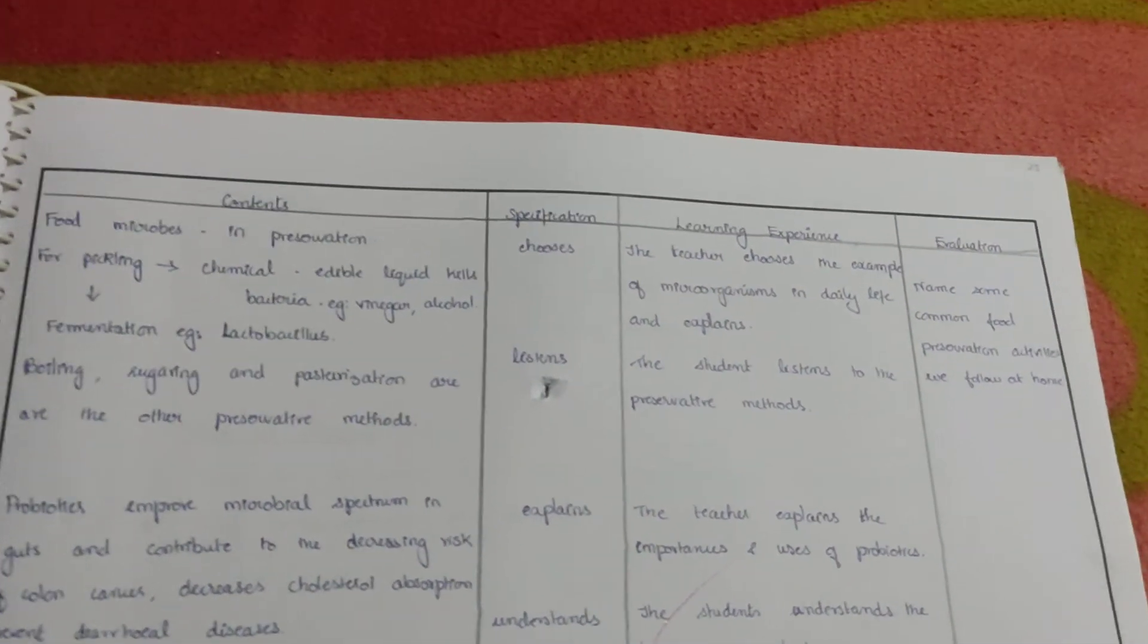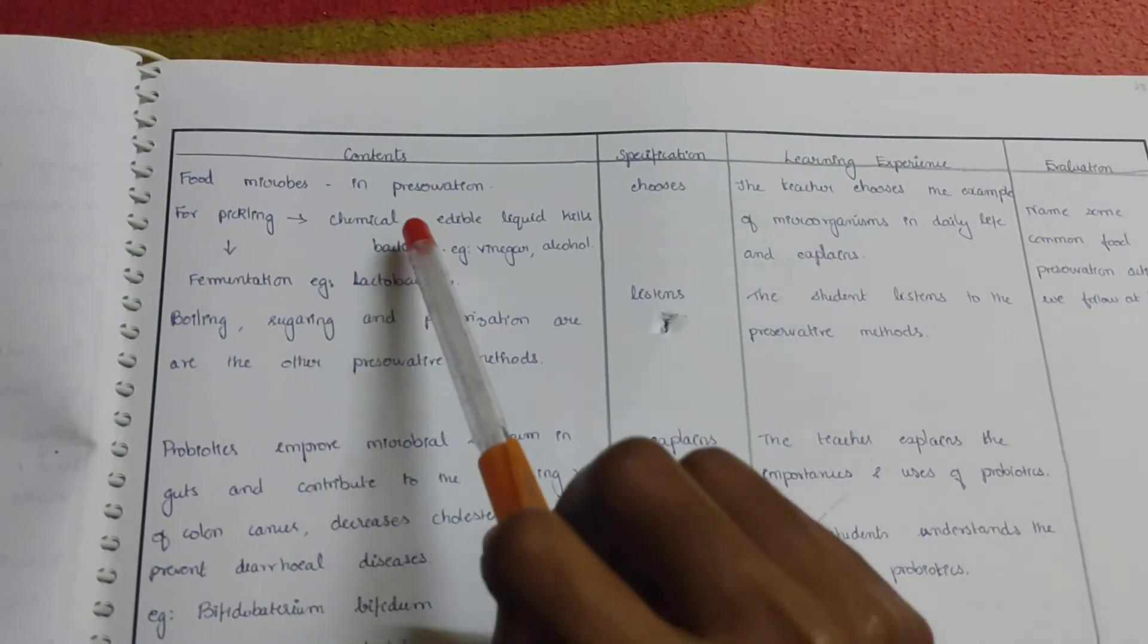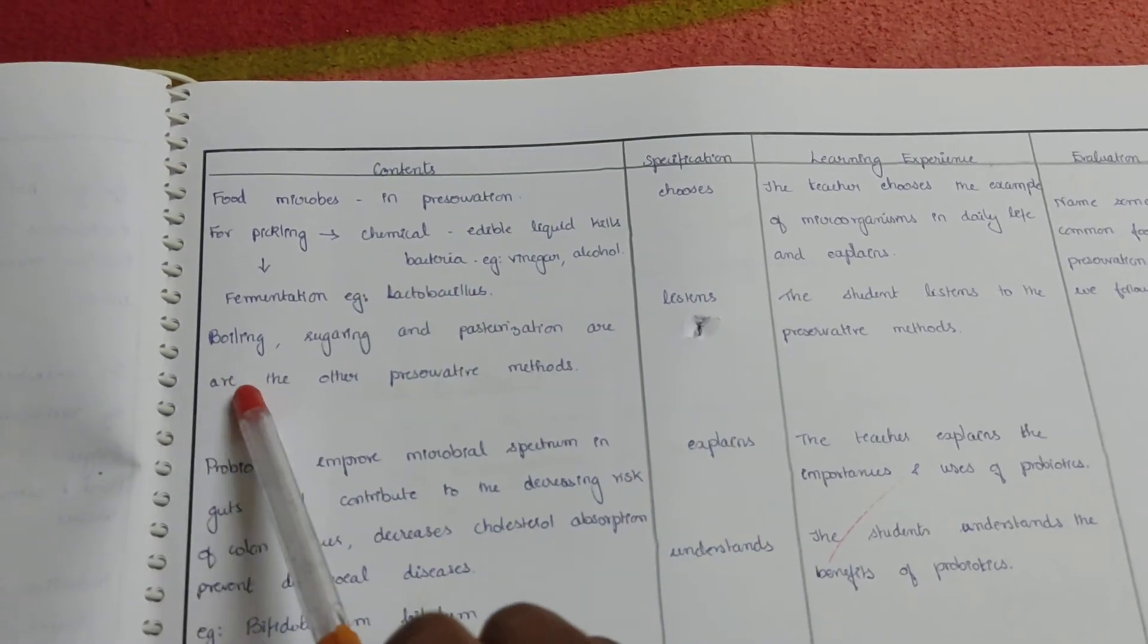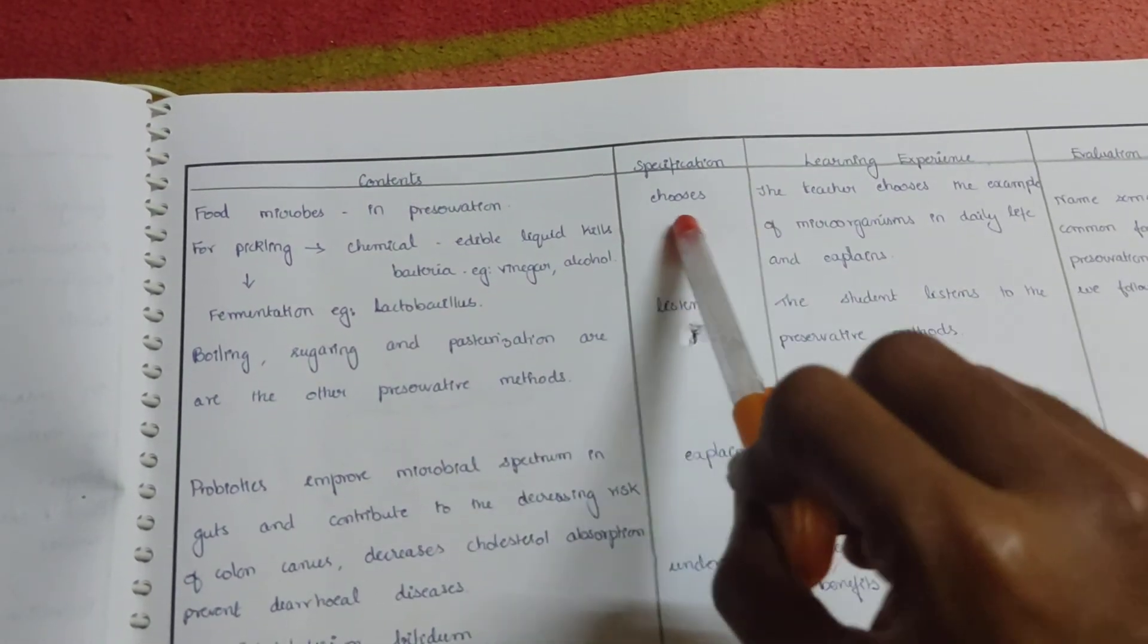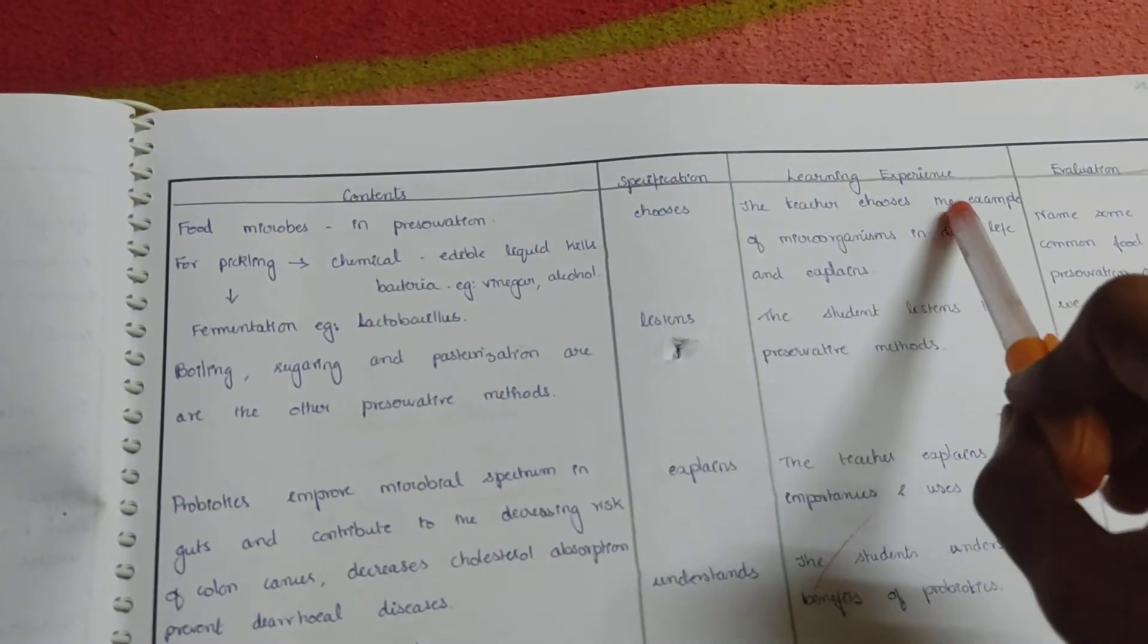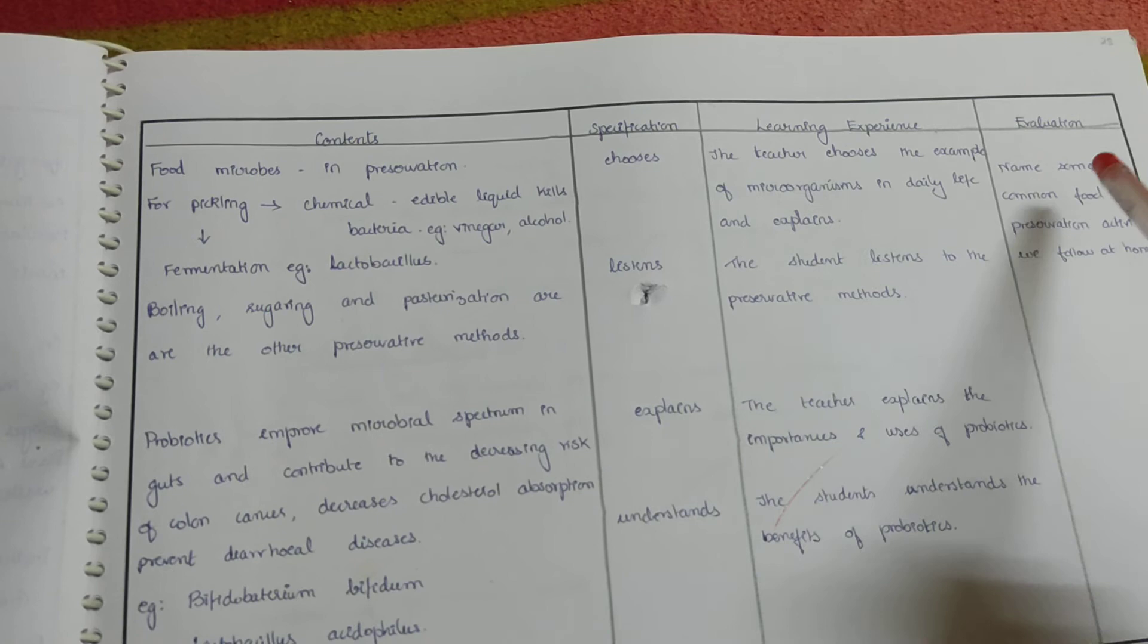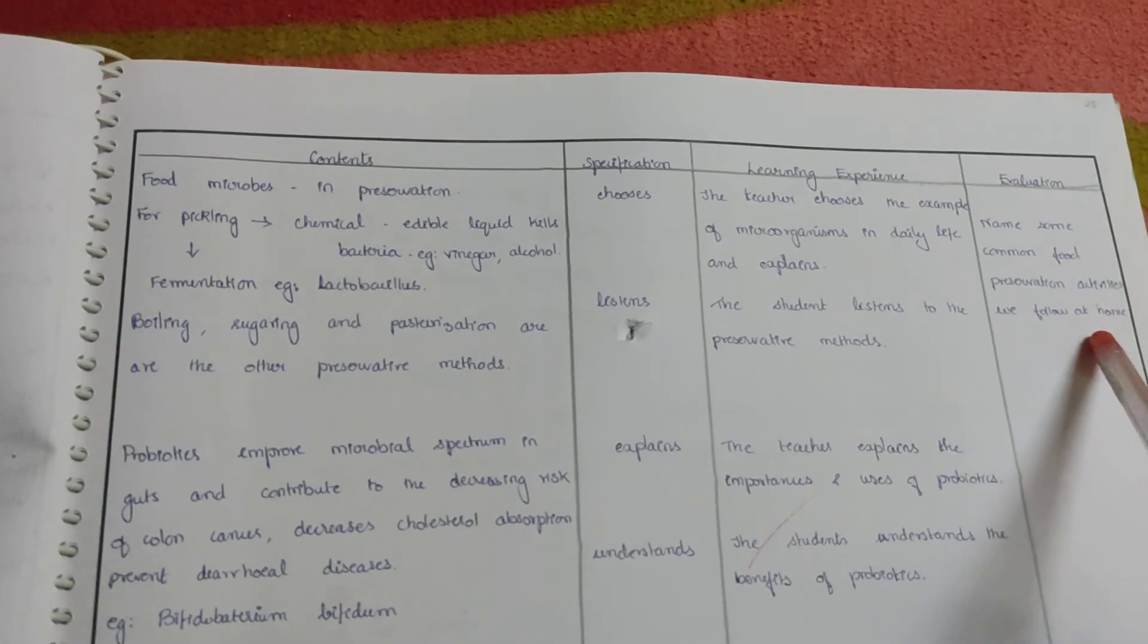Here in this page we have written the content as food microbes help in preservation, for pickling in the chemical way. Edible liquids kills bacteria. Example: vinegar, alcohol, or fermentation example Lactobacillus, and others are like boiling, sugaring, and pasteurization or the other preservative methods. The teacher chooses the example of microorganism in daily life and explains. The student listens to the preservative method. Name some common food preservation activities we follow at home.